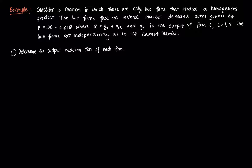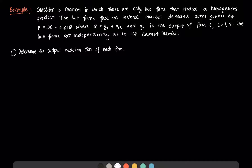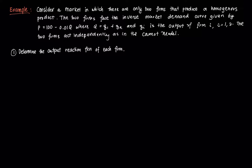In this video we're going to do a specific example using calculus. Consider a market in which there are only two firms that produce a homogeneous product. Those two firms face the inverse demand function P = 100 − 0.01Q, where Q equals the sum of firm 1's output and firm 2's output, and the firms act independently in the Cournot model.